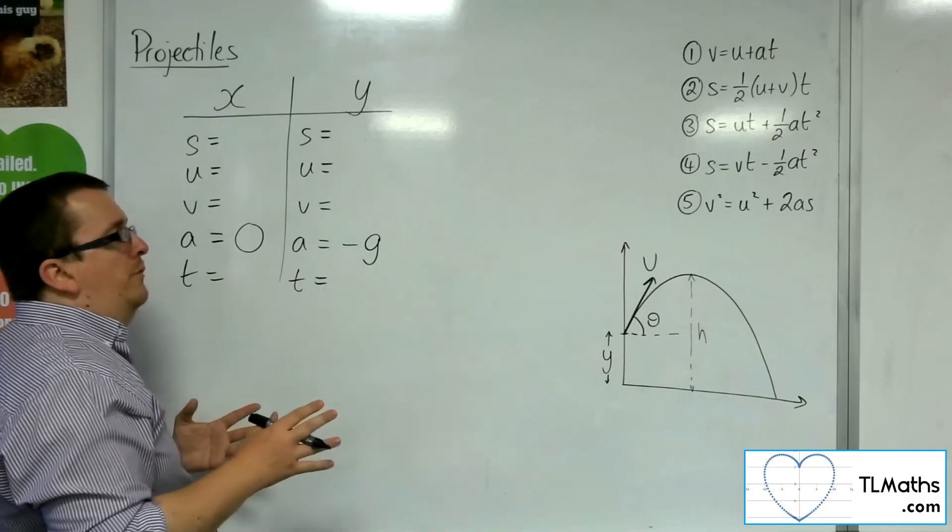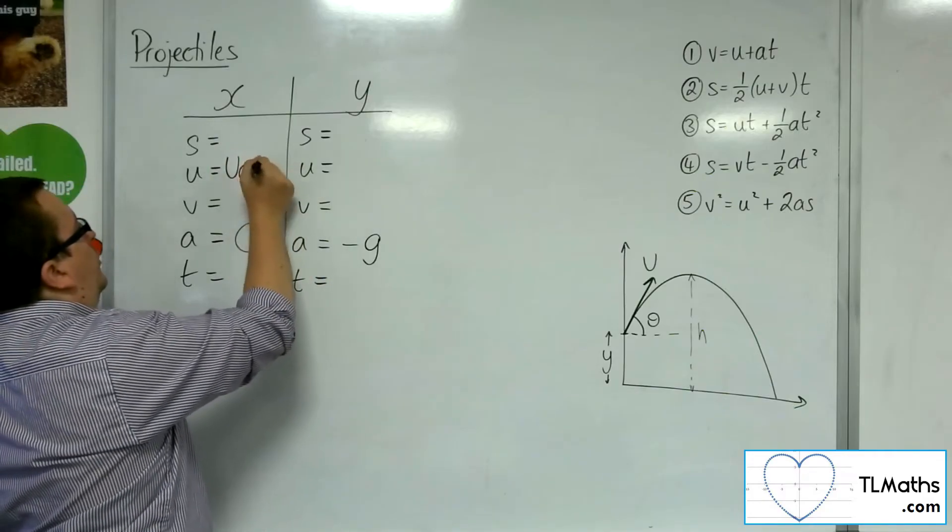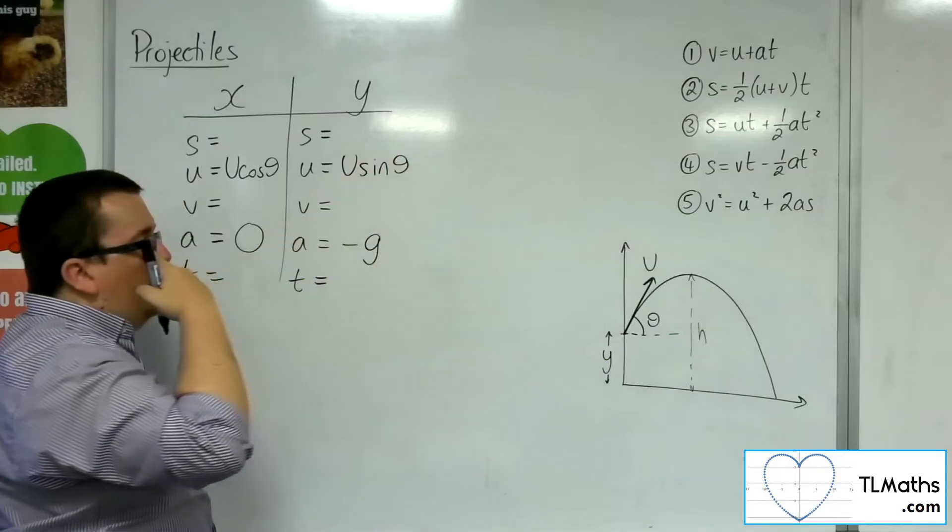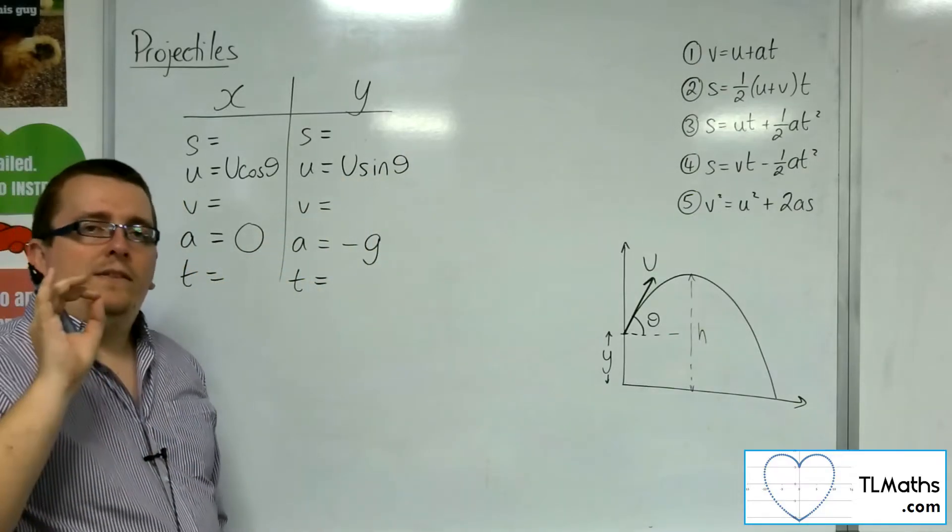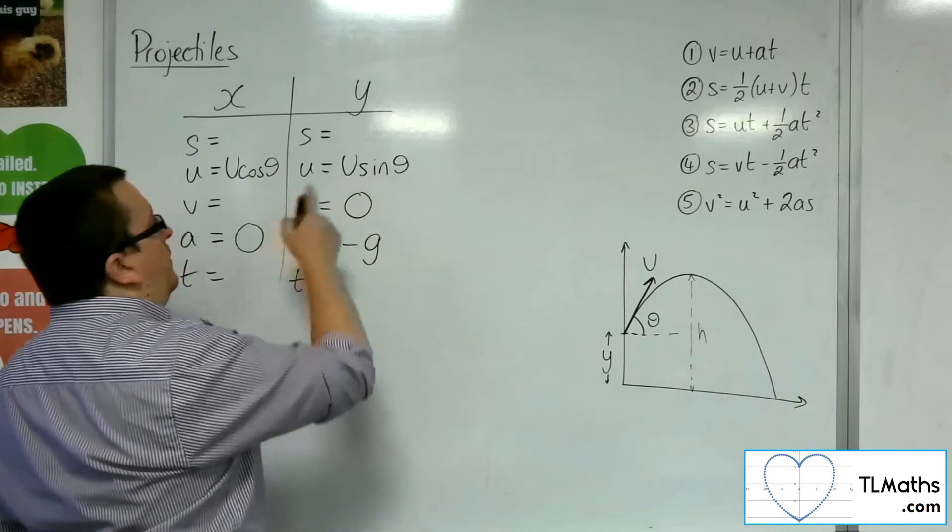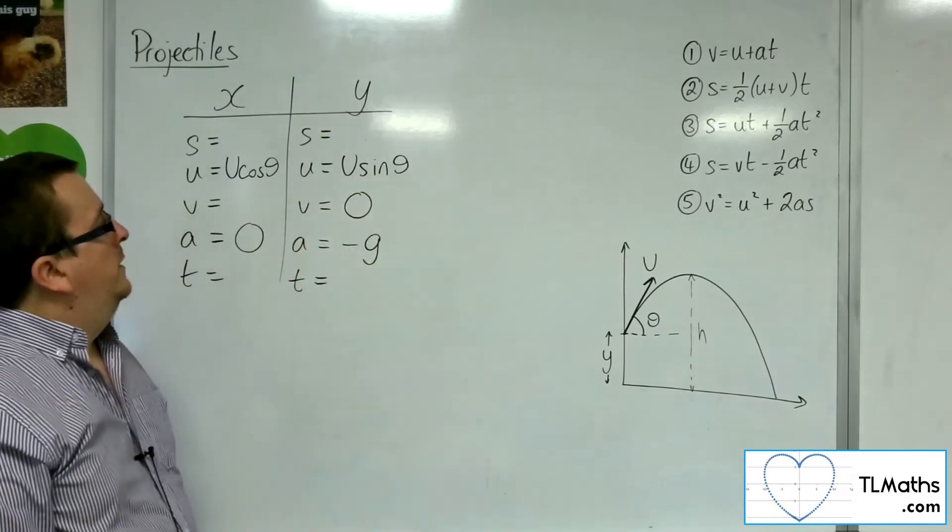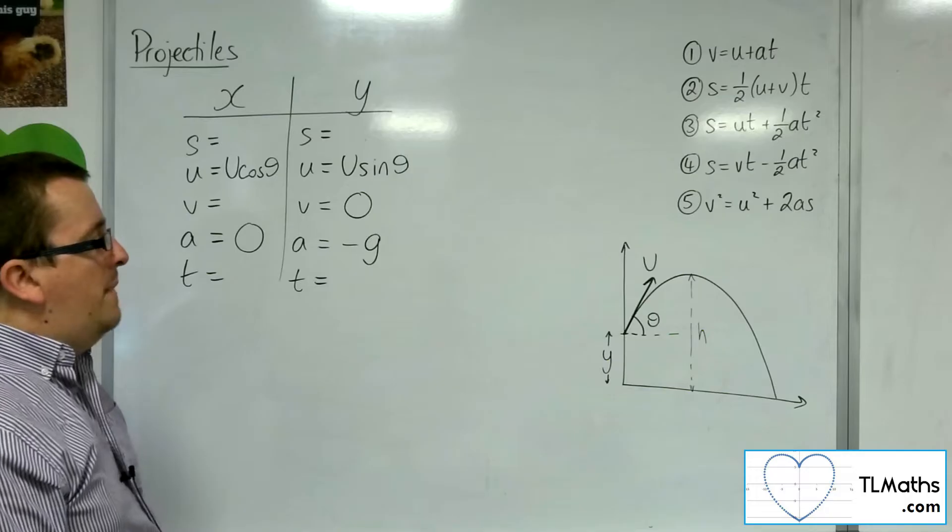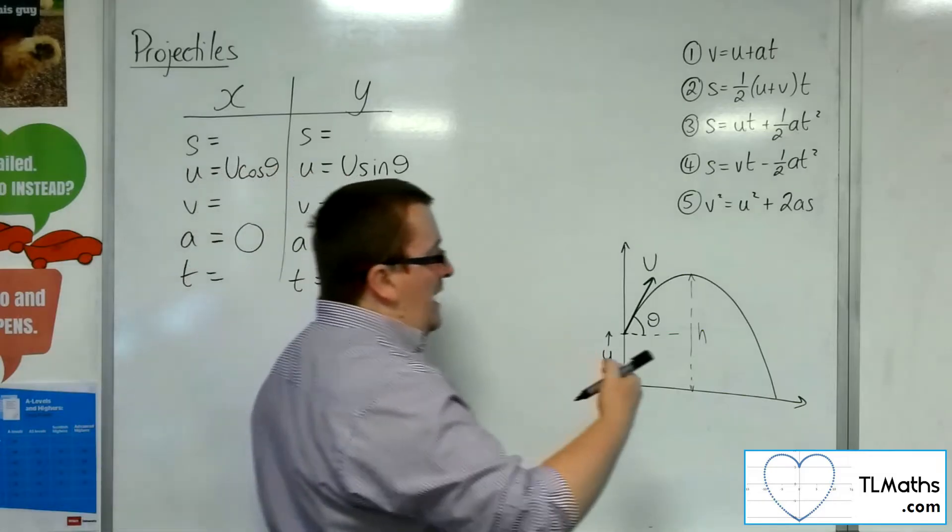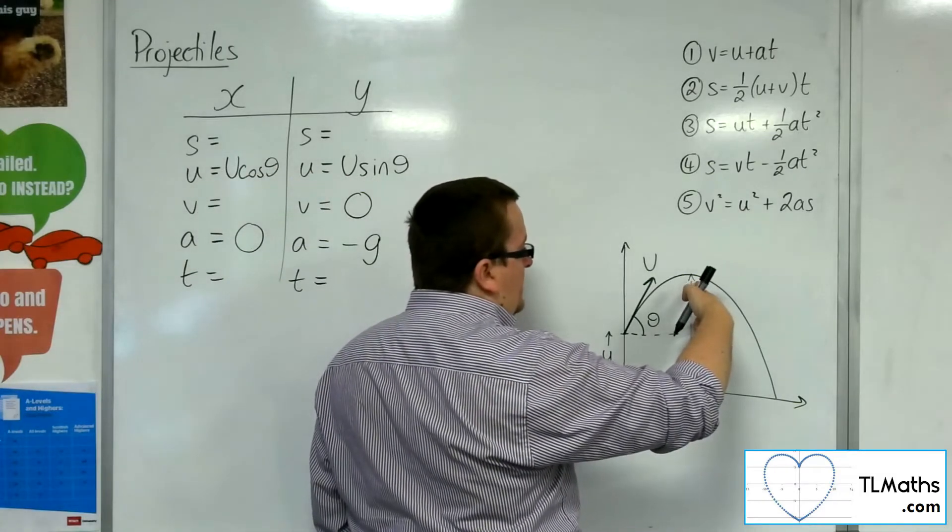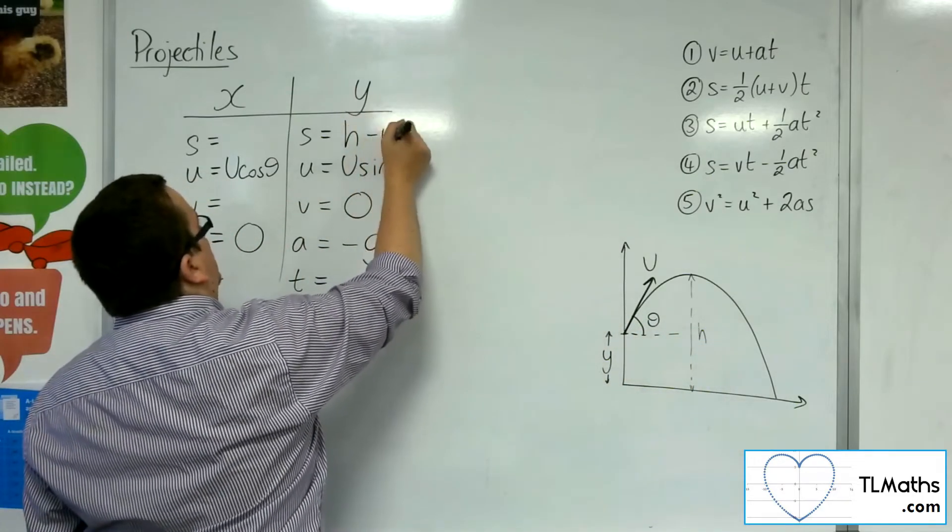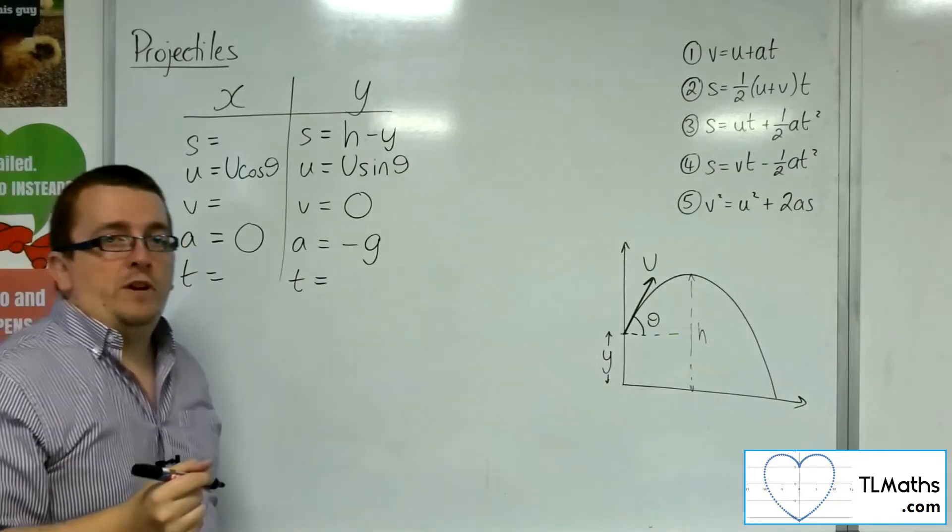Now, the initial velocity for the x component is u cos theta, and for the y, it's u sine theta. Now, the particle's going to reach its maximum height when the vertical component of the velocity is 0, and so we want the y, v_y, to be 0, and it's going to reach its maximum height, S. In other words, its displacement at its maximum height will be that distance there, so h take away y. So that will be the displacement when it reaches its maximum height.